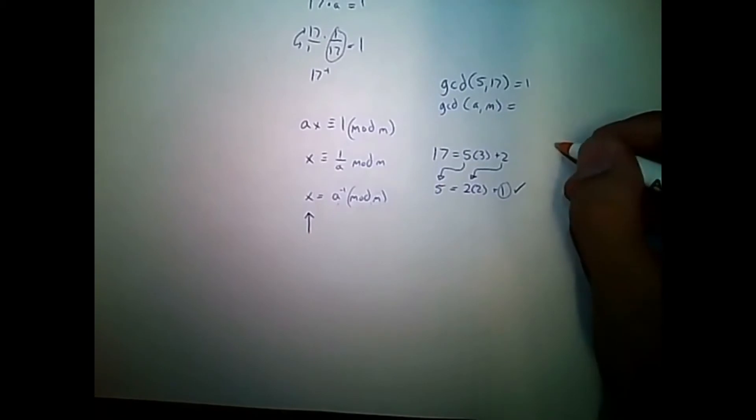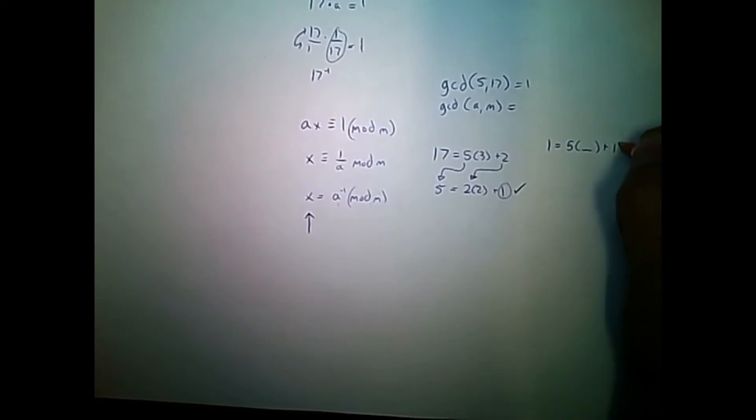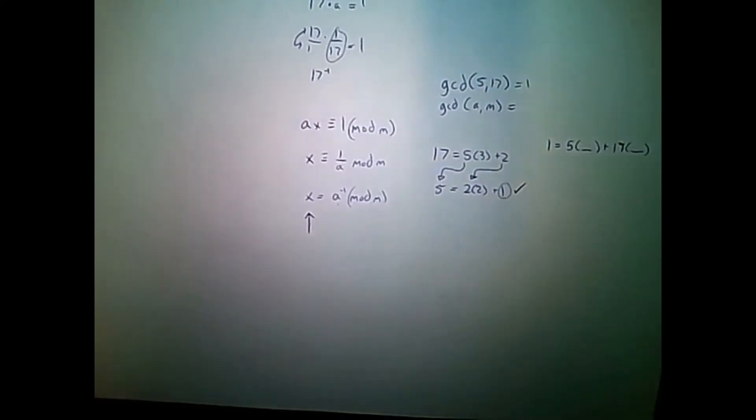And remember what we're solving for. We're going to solve for some equation in the form of 1 equal to 5 times some number plus 17 times some number. This is 17. So, let me walk through the steps here.